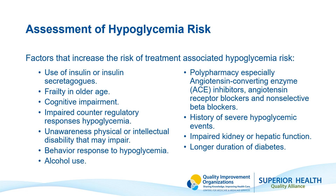When assessing patients, particularly those aged 65 and older in long-term care, it's crucial to consider factors that increase the risk of treatment-associated hypoglycemia. Hypoglycemia in long-term care is a significant problem, especially for those who are not cognitively intact. Several scenarios and medications can cause hypoglycemia, and often it's related to food intake or lack of it. Long-acting insulins are not preferred; it's better to use rapid-acting ones.